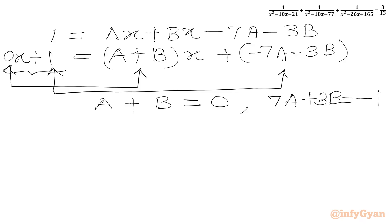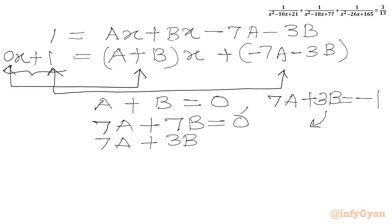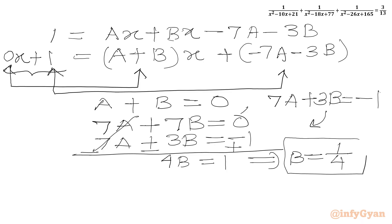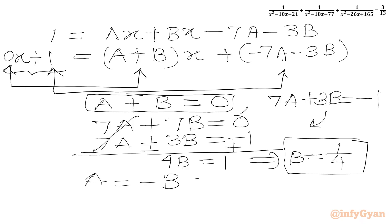We multiply equation A plus B equals 0 by 7, giving 7A plus 7B equals 0. Our second equation is 7A plus 3B equals minus 1. Subtracting the second from the first gives 4B equals 1, so B equals 1 over 4. Using A plus B equals 0, we get A equals minus 1 over 4.